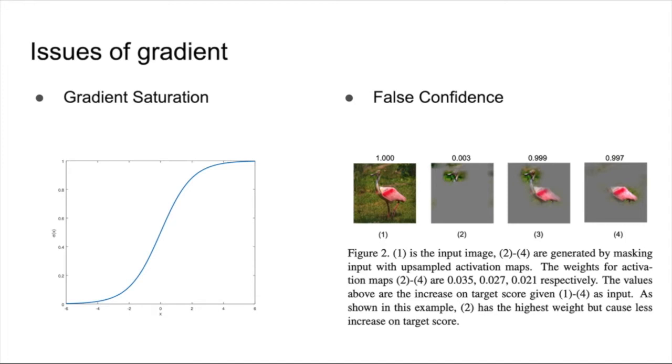The second is the problem of false confidence, which means activation maps with higher weights do not necessarily lead to more decision-relevant regions in the input. In other words, the region highlighted in an activation map with smaller weight may lead to more increase in confidence. This strange phenomenon is quite common in gradient-based approximation.